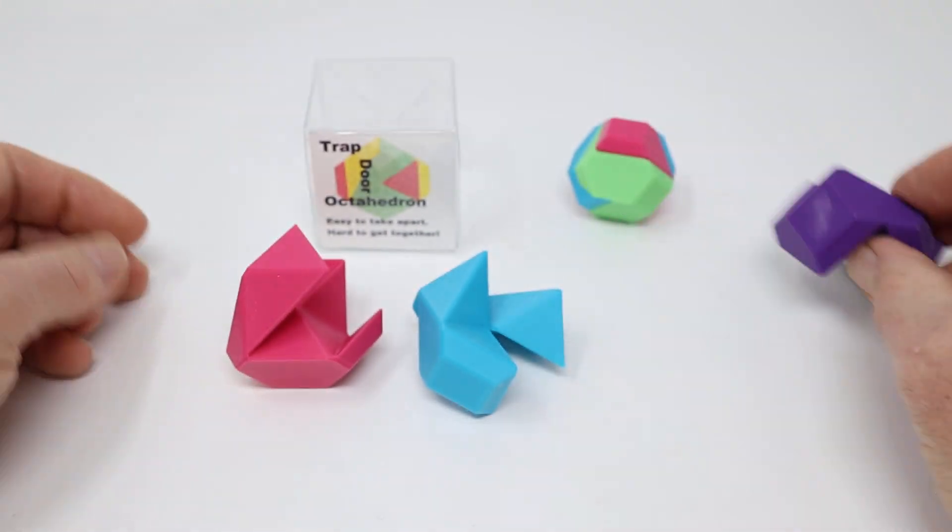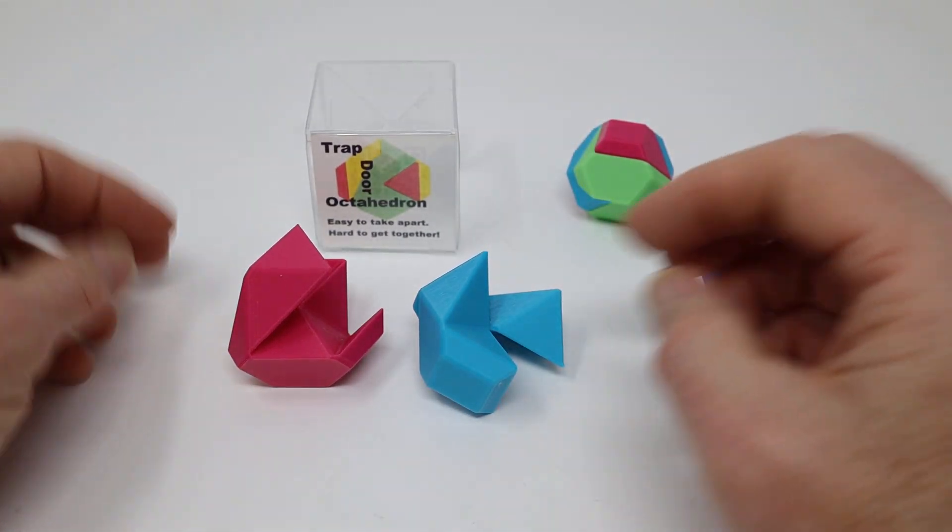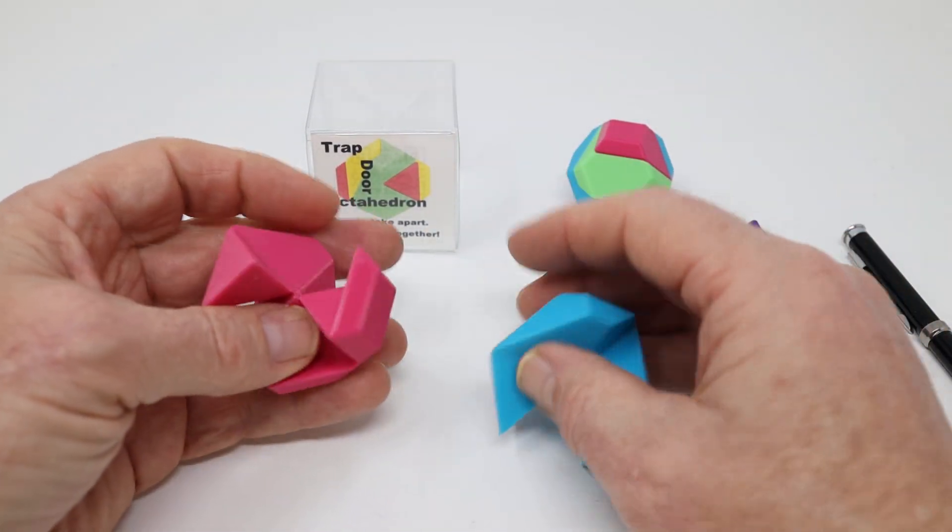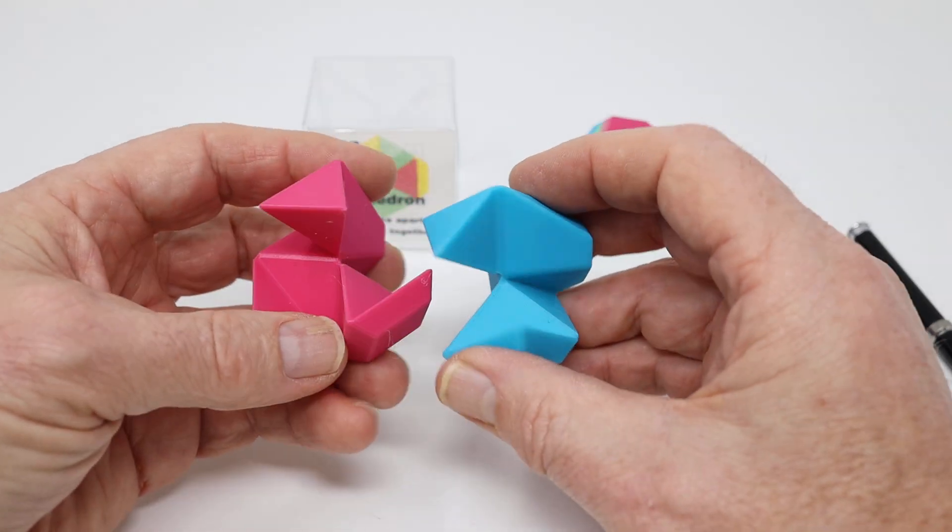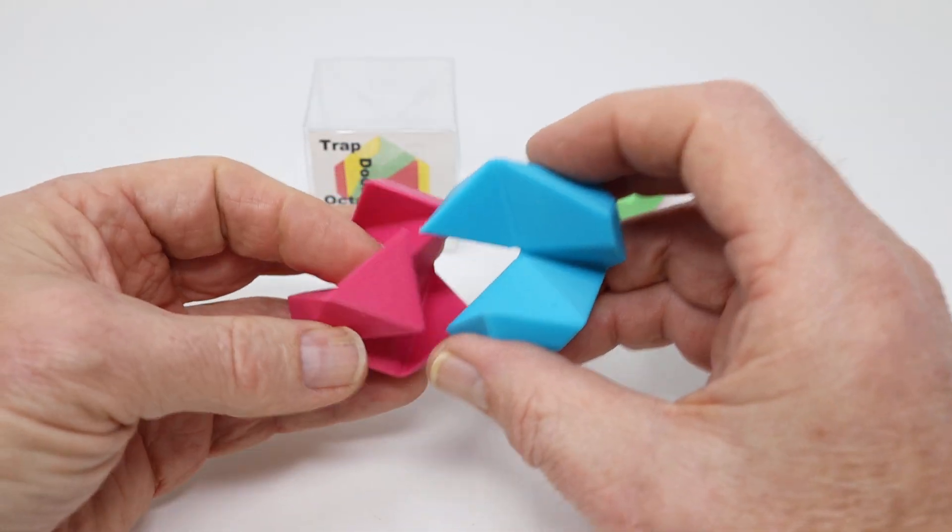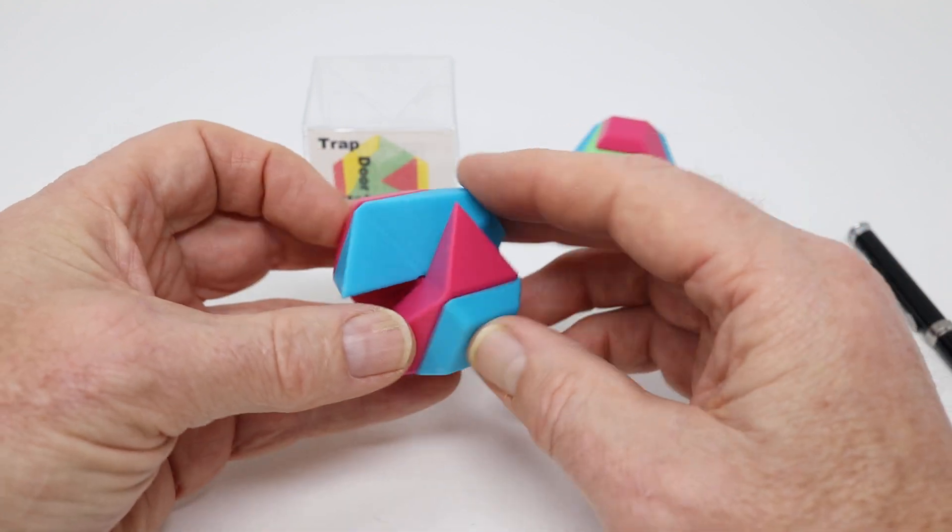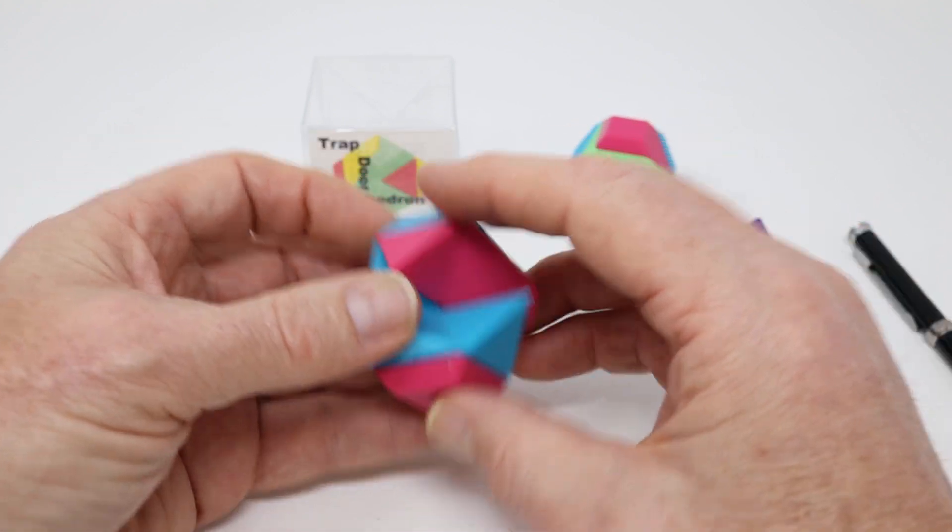So we're going to take this small piece and set it aside for a second. Then we have to figure out how these two guys slide together. I believe this is the orientation we want.